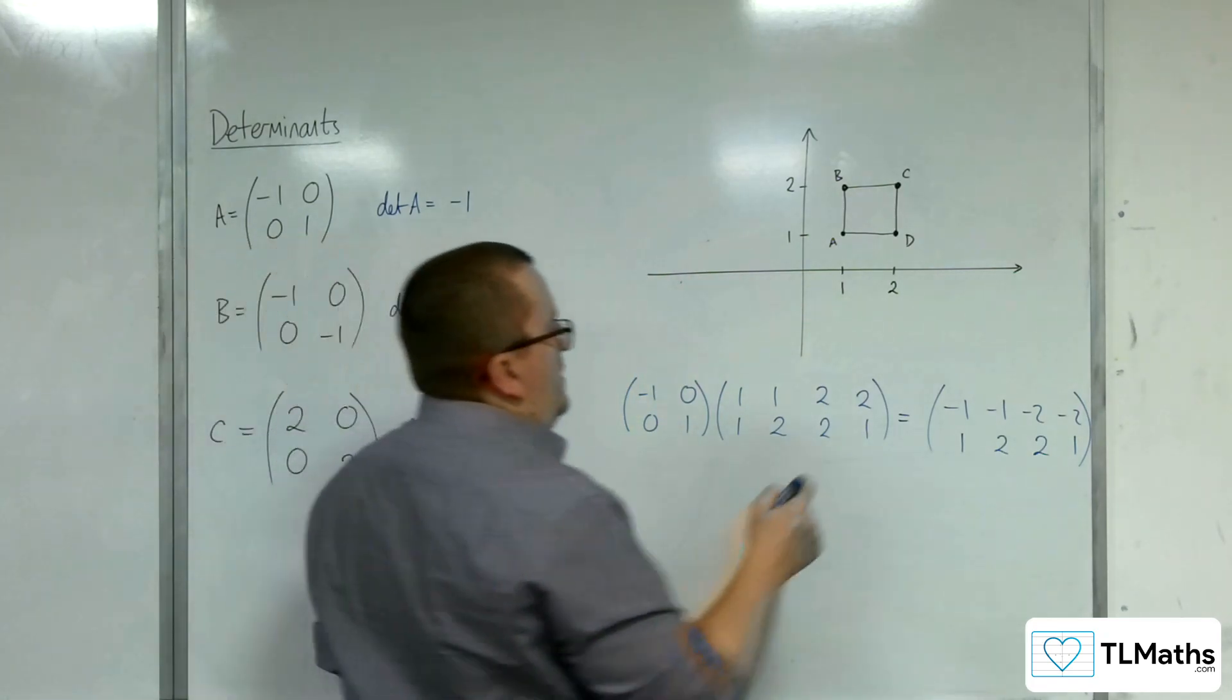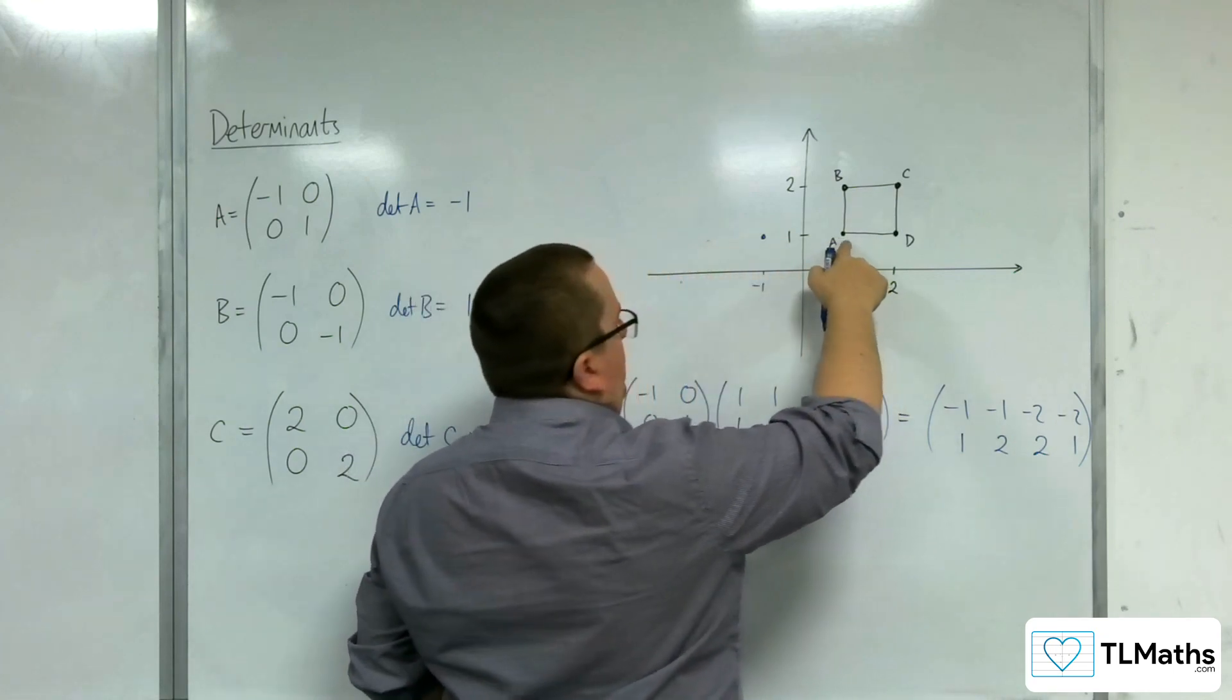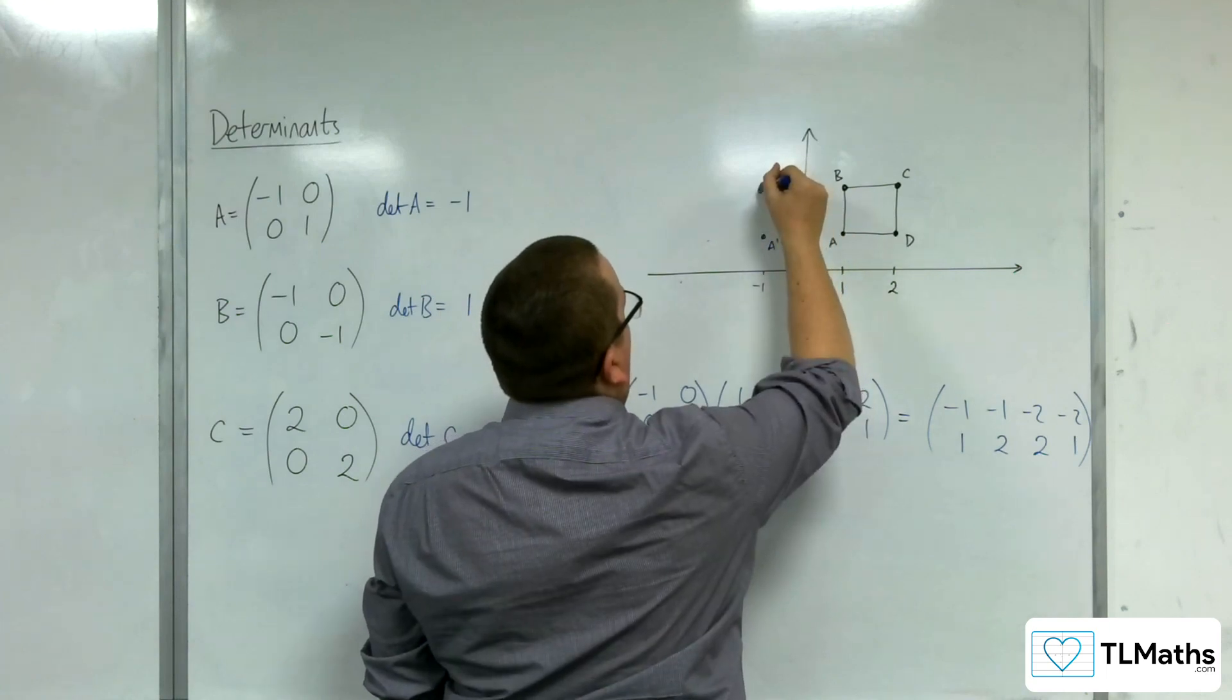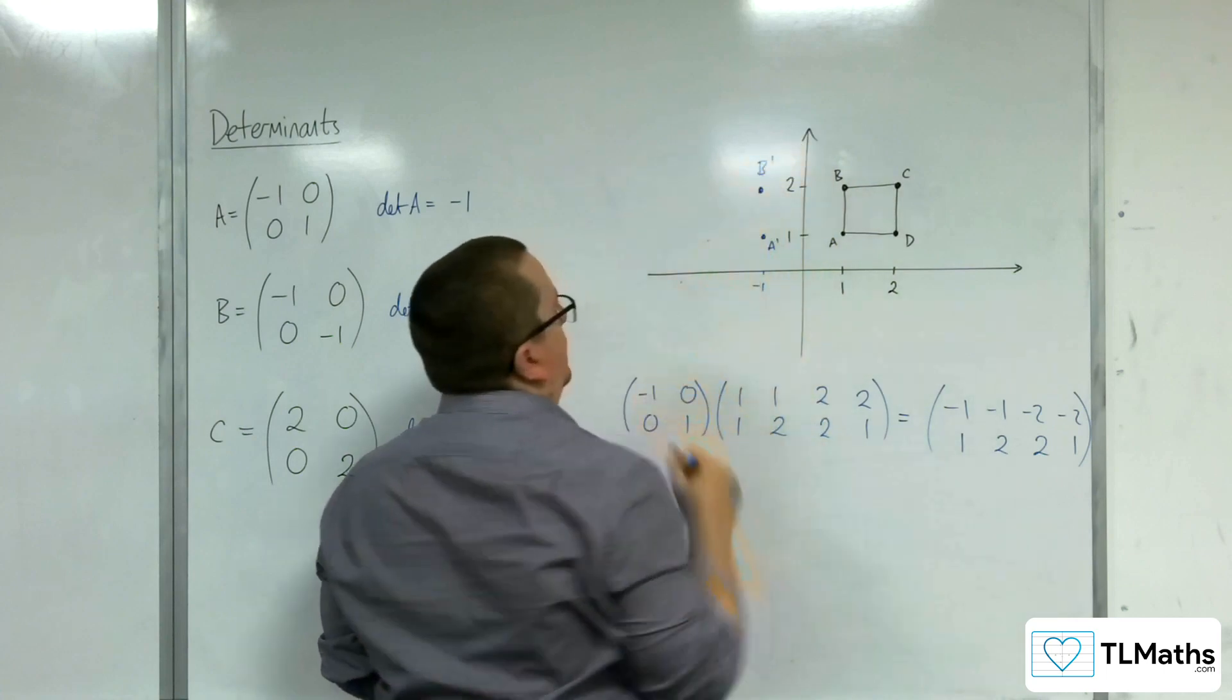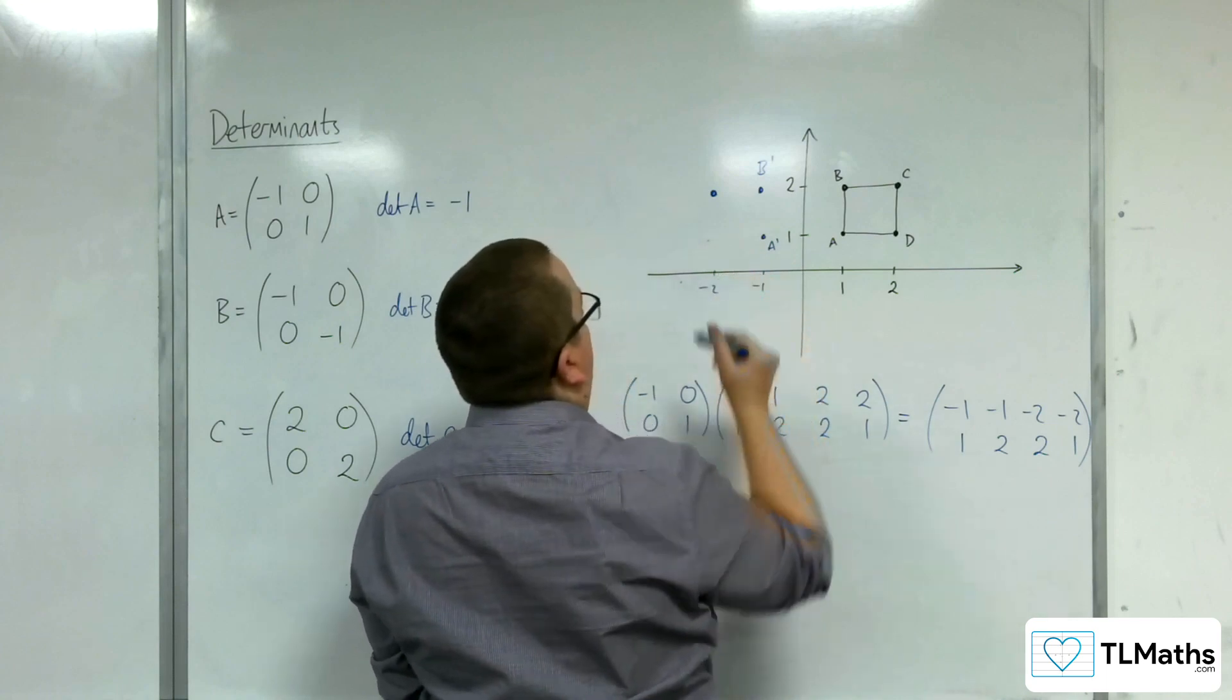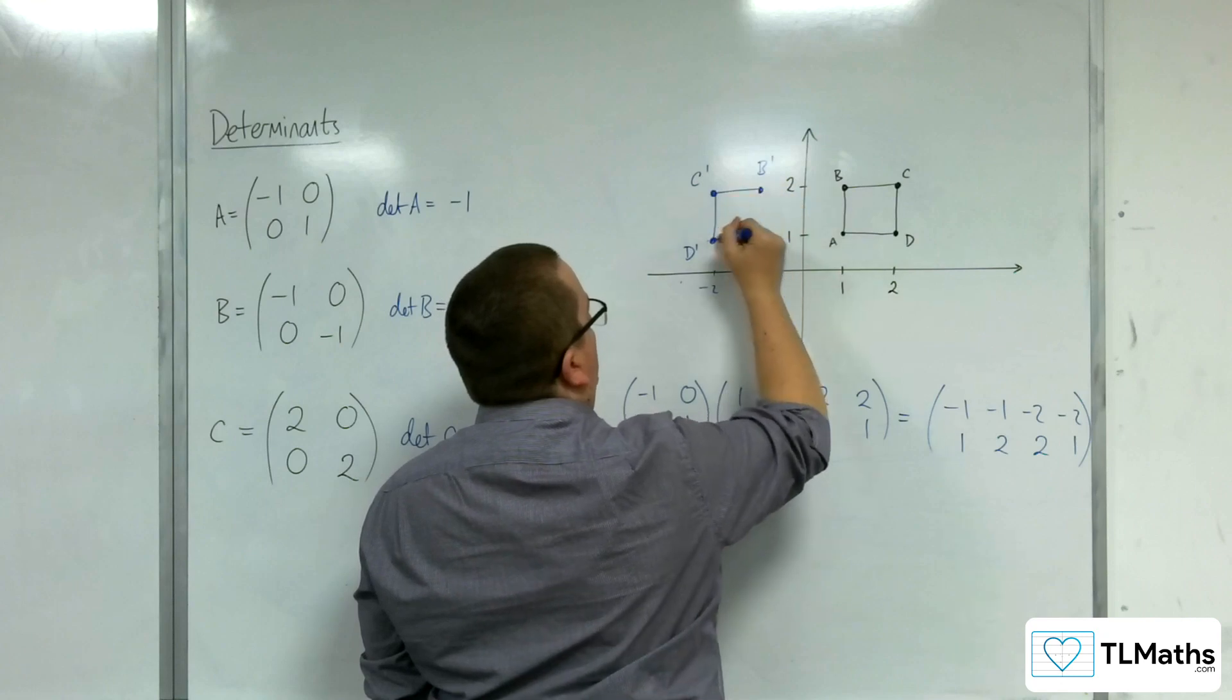So my new coordinates are (-1, 1), so at this point here. That is my first coordinate A, where it has been mapped to, so we'll call that A prime. (-1, 2) is my next one, so that's where B has been mapped to, B prime. Then we've got (-2, 2), which is over here, where C has been mapped to. And (-2, 1) is this point here, where D has been mapped to. And so this would be my new shape.